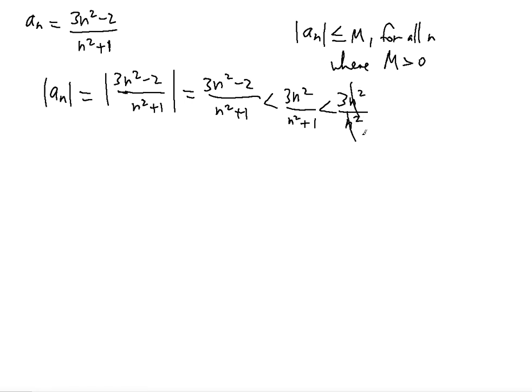And now notice that the n squared can be cancelled and that means that the boundary value is going to be 3.